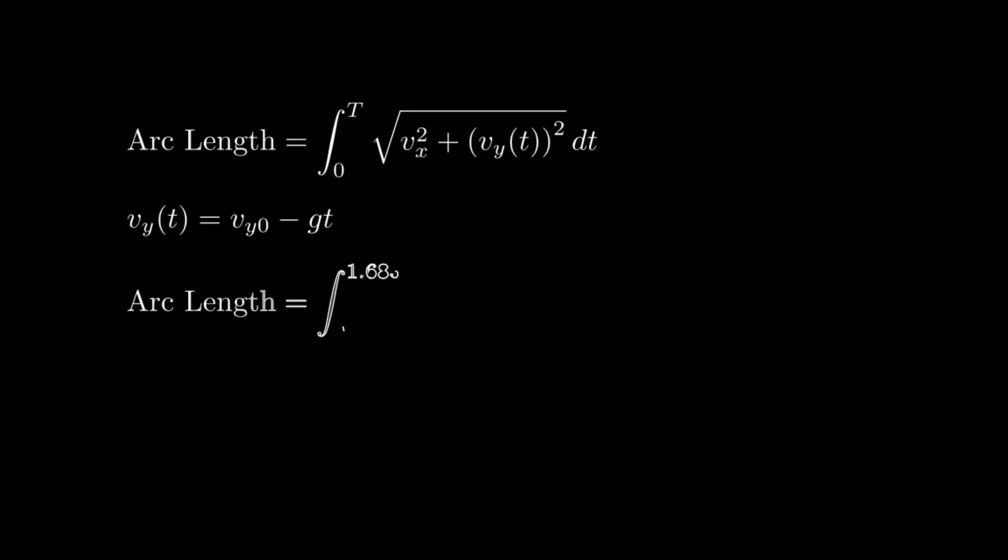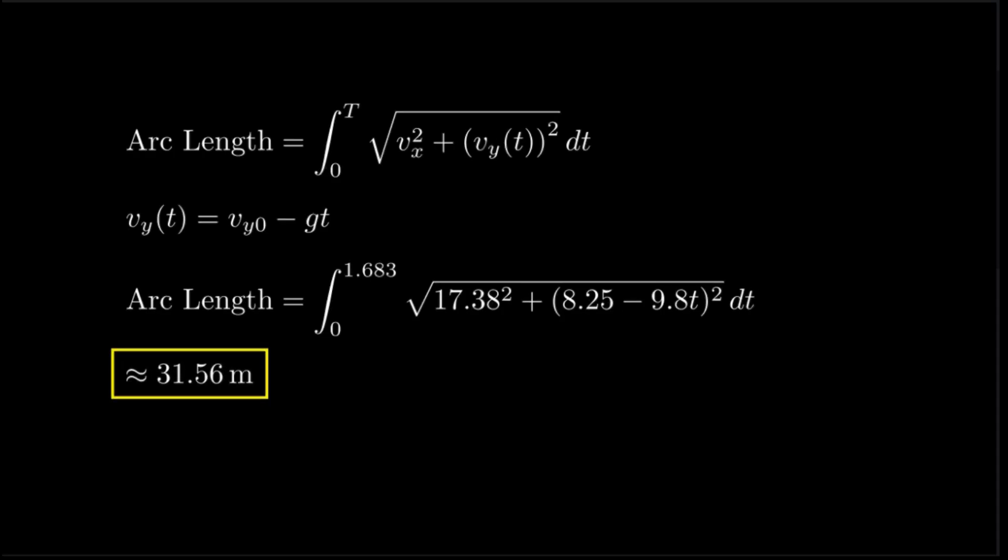So far, we've calculated how far the ball has traveled horizontally. But the real path that follows through the air is longer, because the ball curves. To calculate that, we use the arc length formula, integrating total velocity over time. Since vertical velocity changes as the ball rises and falls, we define it as this equation. By plugging in all of our numbers, we see the arc length to be approximately 31.56 meters.